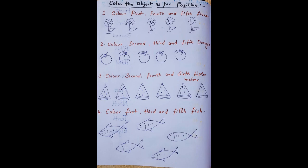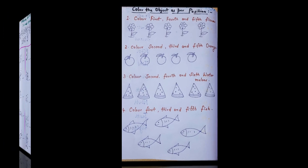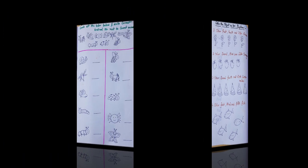The kid needs to understand which is the first flower and color it, then go to the fourth flower and color it, and the same way go to the fifth flower and color it. They need to understand the position and color whichever picture is at the required position.